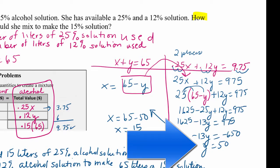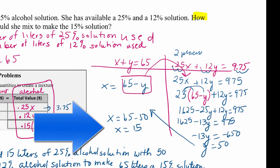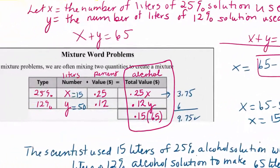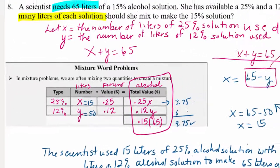Subtracting 50 from 65 gives x equals 15. Checking in the table: 15 times 0.25 is 3.75 liters of alcohol, and 50 times 0.12 is 6 liters of alcohol. Adding those gives 9.75 liters total, which confirms the answer checks out.